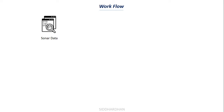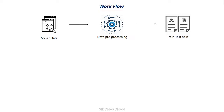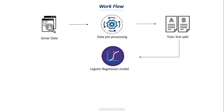Once we have the data we will pre-process it — we cannot use it directly. We need to analyze the data and understand it. Once we process the data we will split it into training and test data. For example, if there are 100 instances, we train our model with 90 and test it with the remaining 10. Once we split our data into training and test data, we feed it to our machine learning model. In this use case we are going to use a logistic regression model, because logistic regression works really well for binary classification problems.